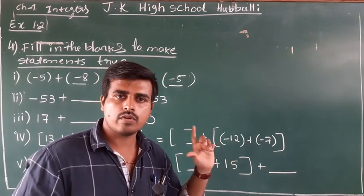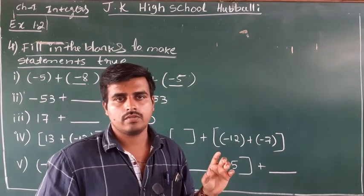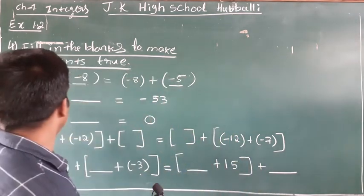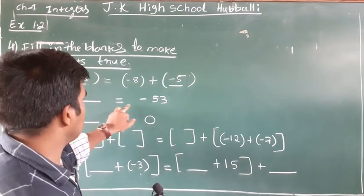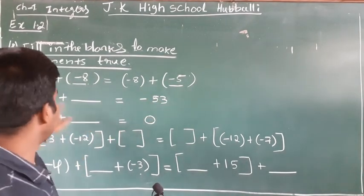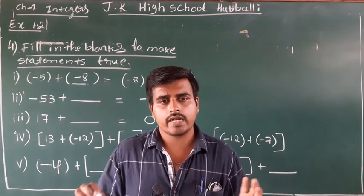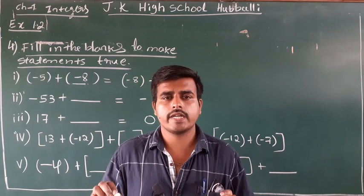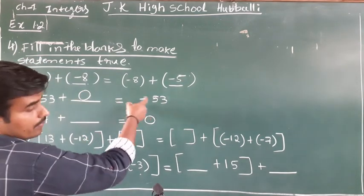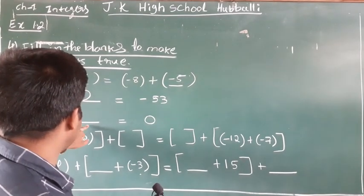Commutative property of addition — it is very easy. All these fill-in-the-blanks depend on one or another property; we just have to recall that property and choose the integer accordingly, keeping in mind that the statement must remain true. Second one: minus 53 plus blank equals minus 53. Since minus 53 remains minus 53 after adding some number, its identity remains the same. The additive identity — the number which when added to any number keeps its identity the same — is zero. So minus 53 plus zero equals minus 53; therefore zero is the additive identity.